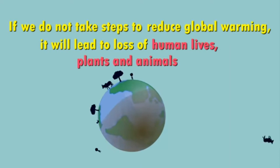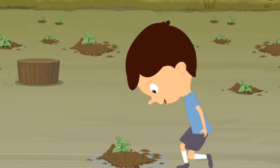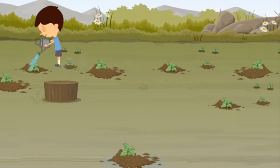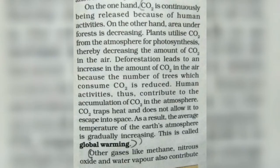If we do not take steps to reduce global warming, it will lead to the loss of humans, plants, and animals, and it will be very difficult for us to live. On one hand, carbon dioxide is continuously being released because of human activity, and on the other hand, we have cut the plants that absorb carbon dioxide. This imbalance causes the CO2 layer to increase, trapping more heat, and the average temperature of the earth gradually rises — this condition is called global warming.